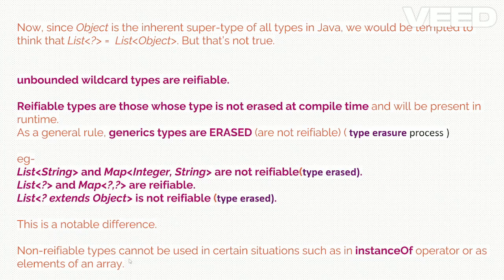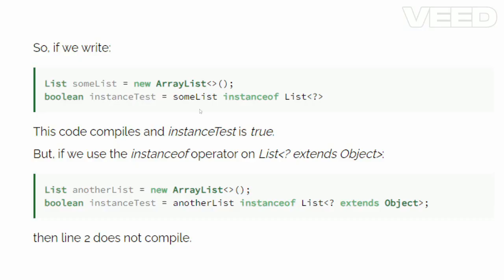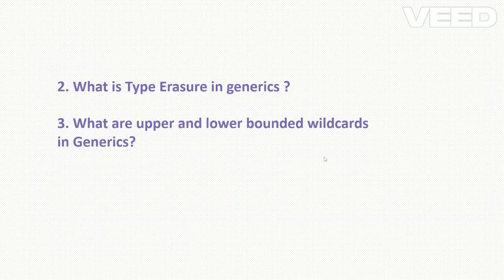Non-reifiable types cannot be used in certain situations, such as with the instanceof operator. For example, using instanceof with an unbounded wildcard like List<?> compiles fine, but using instanceof with '? extends Object' will not compile and will give a compile-time error.